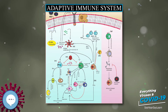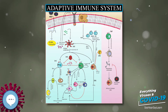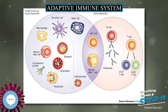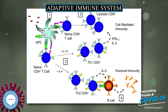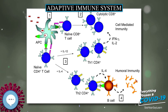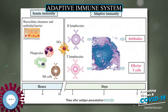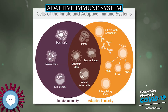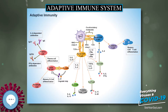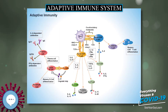This mechanism allows a small number of genes to generate a vast number of different antigen receptors, which are then uniquely expressed on each individual lymphocyte. Since the gene rearrangement leads to an irreversible change in the DNA of each cell, all progeny — offspring — of that cell inherit genes that encode the same receptor specificity, including the memory B cells and memory T cells that are the keys to long-lived specific immunity.